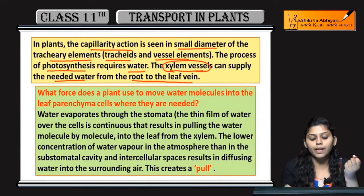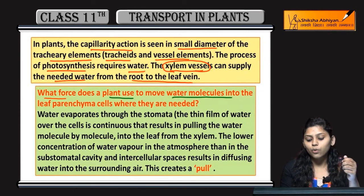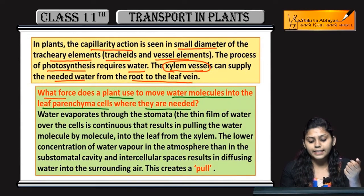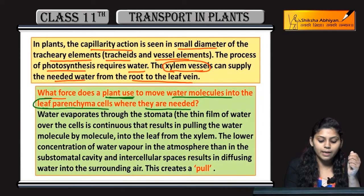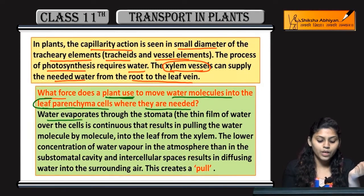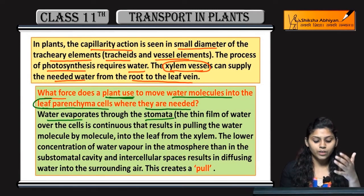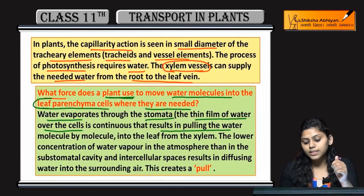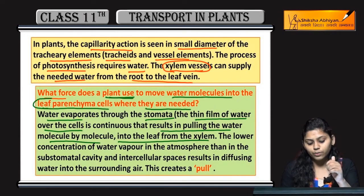जो xylem vessels हैं, वो supply करते हैं water. What force does a plant use to move water molecules into the leaf parenchyma cells where they are needed? Water evaporate करता है stomata से. Stomata से excess water loss होता है and gaseous exchange होता है. Thin film of water over the cell is continuous, that results in pulling the water molecule by molecule into the leaf from the xylem.